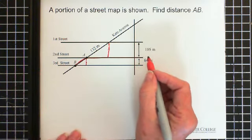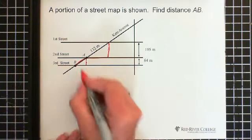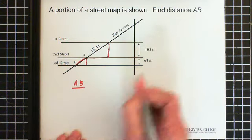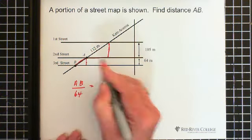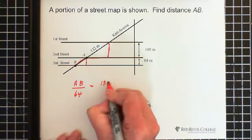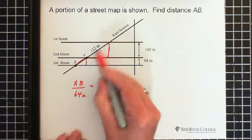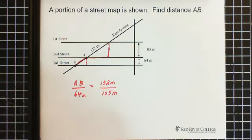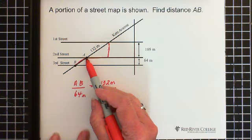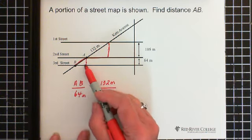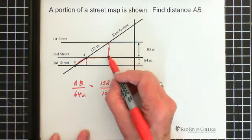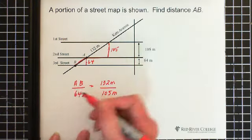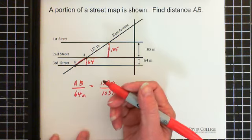So then we can say, which one is the unknown distance? A to B. So A to B with respect to 64 has to equal 132, these units are meters, so the 132 with respect to the 105 meters. So again, this distance with respect to this distance has to equal this distance with respect to this one. This is our 105, this is our 64, and that's how we set it up. And our unknown, I've set it up so the unknown is in the numerator so it's a little easier to solve.